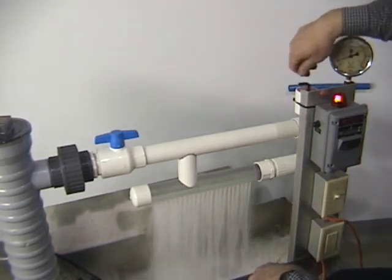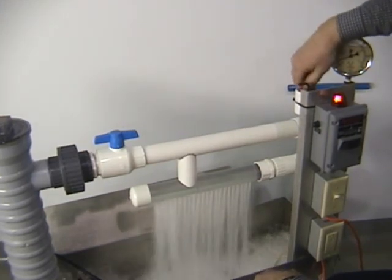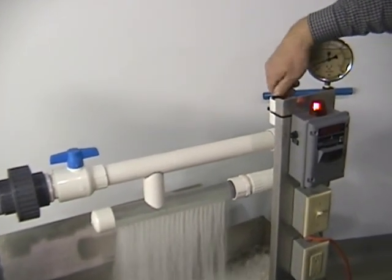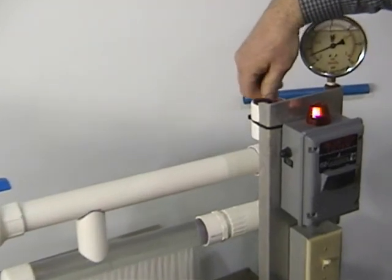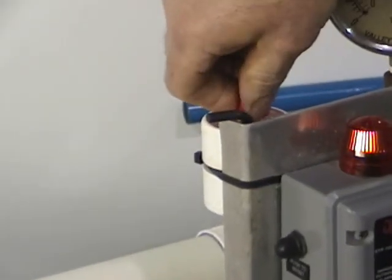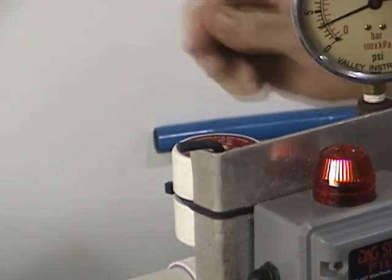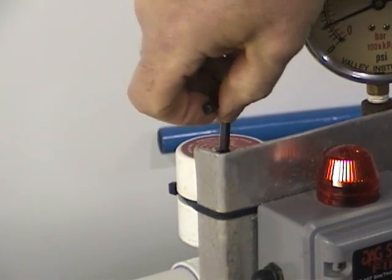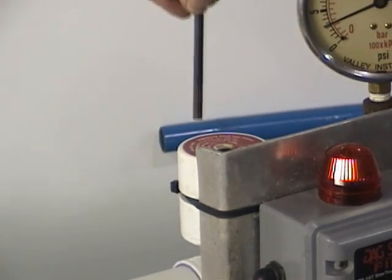I'll remove the 8 inch pipe plug to access the adjustment screw. Each kit comes with a 3-16th Allen wrench to make the adjustment.